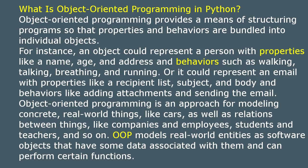Or it could represent an email with properties like recipients list, subject, and body, and behaviors like adding attachments and sending the email. Put another way, object oriented programming is an approach for modeling concrete real-world things like cars, as well as relations between things like companies and employees, students and teachers, and so on.